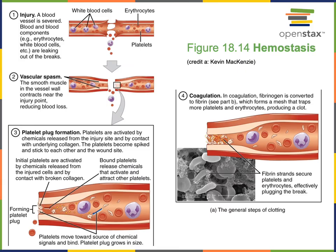Injury to a blood vessel initiates the process of hemostasis, which involves three steps: a vascular spasm, platelet plug formation, and coagulation. In the first step, the ruptured blood vessel wall stimulates endothelial cells in the inner lining to release a paracrine signal known as endothelin, which stimulates the vascular smooth muscle to contract. This vasoconstriction increases resistance and decreases blood flow, helping to slow the rate of blood loss.